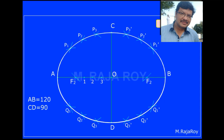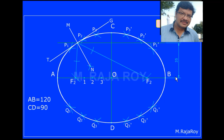Now I'll explain how to draw the tangent and normal to this ellipse. Assume the given point is 35mm from the major axis. Draw a line parallel to the major axis at a distance of 30mm — you will get point P as shown. Now draw the line joining P, F1, and F2. For the angle F1-P-F2, draw the angular bisector. That angular bisector will become the normal. The line perpendicular to this angular bisector will become the tangent as shown.